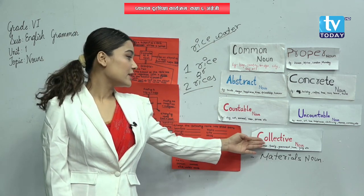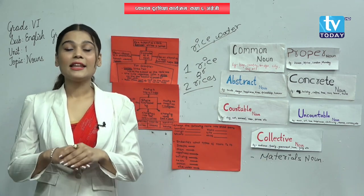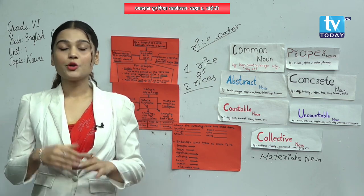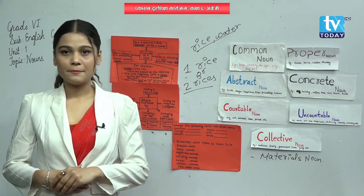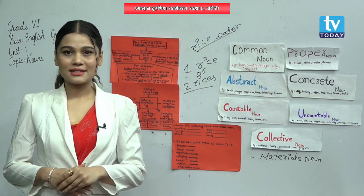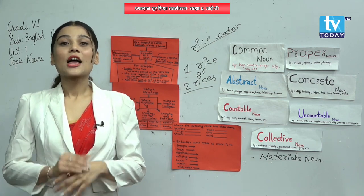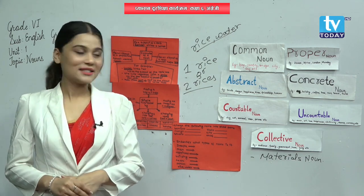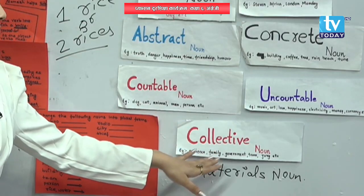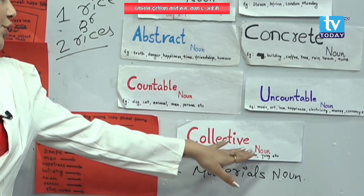The word 'collective' itself defines it — collective noun refers to a group: group of people, audience, jury members, etc. They are a few examples of collective nouns. You can look here: audience, family, government, team, jury, etc.